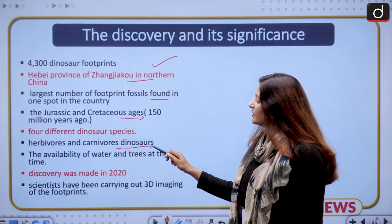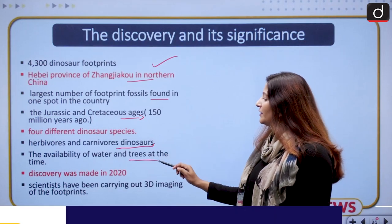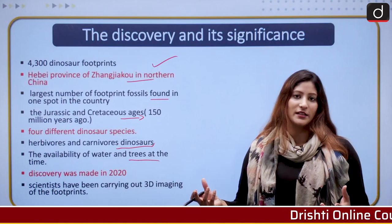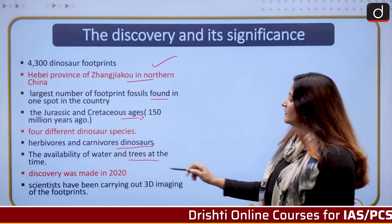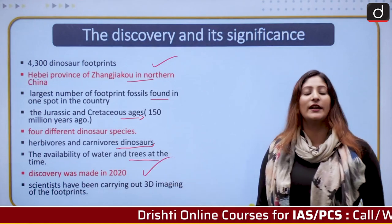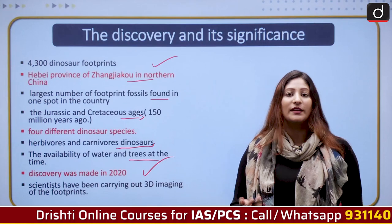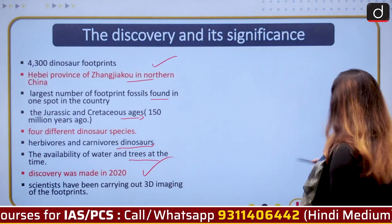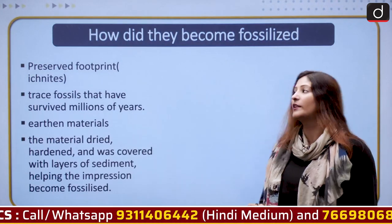They belong to both herbivores and carnivores type. The availability of water and trees at that time might have encouraged the presence of dinosaurs in this area. The discovery was made in 2020, but because scientists were focused on getting 3D prints and moulds, it took 2 years to ensure these were footprints of dinosaurs.